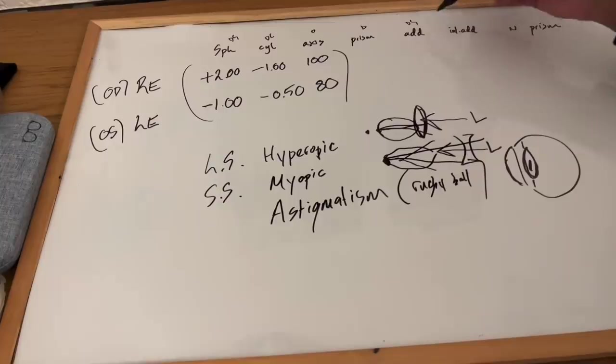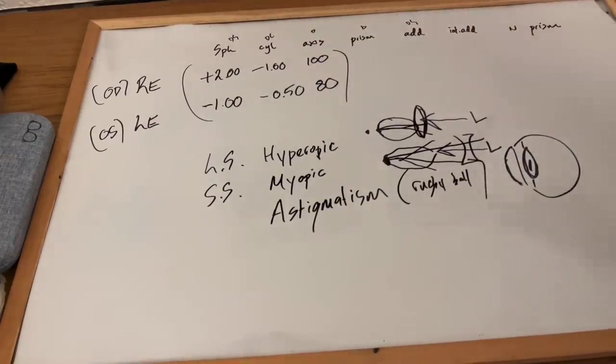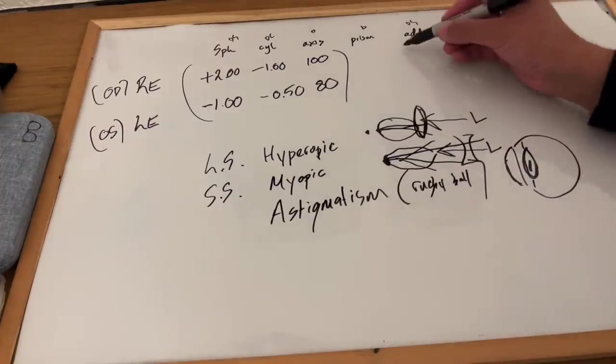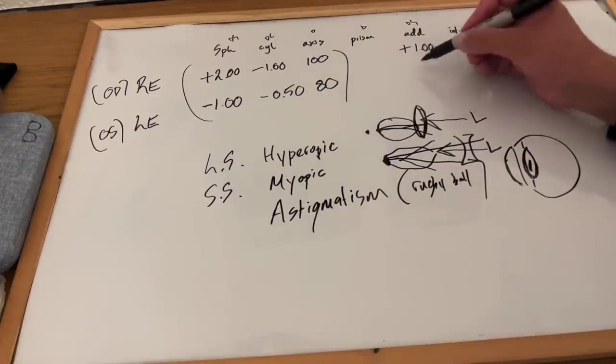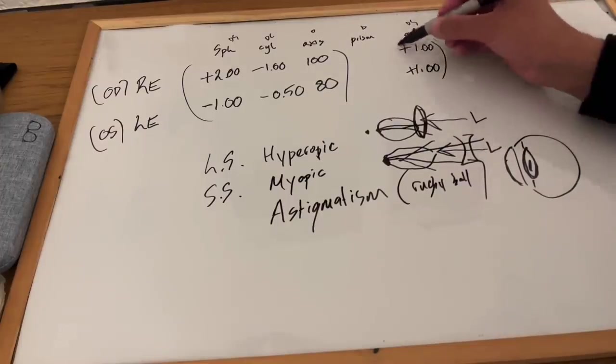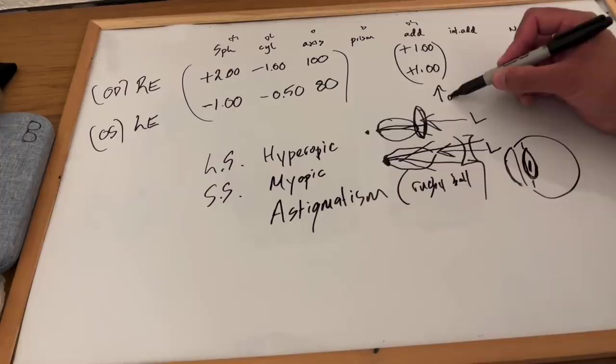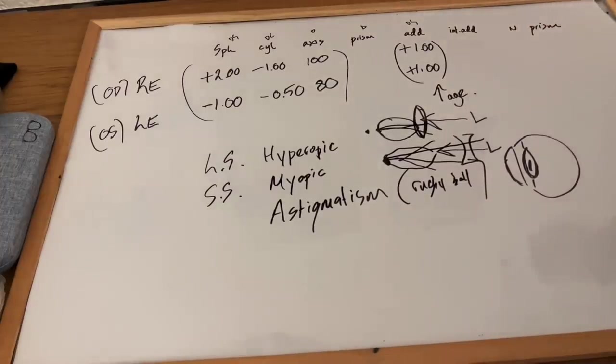If you are presbyopic, so you're wearing your general prescription but you are also having problems focusing on your reading vision, you may be prescribed a reading add. The add required usually gradually increases with age.